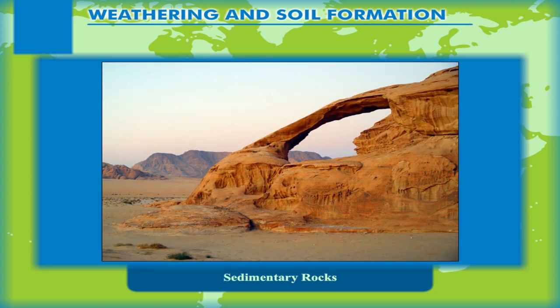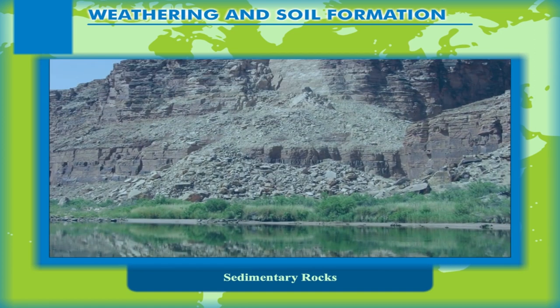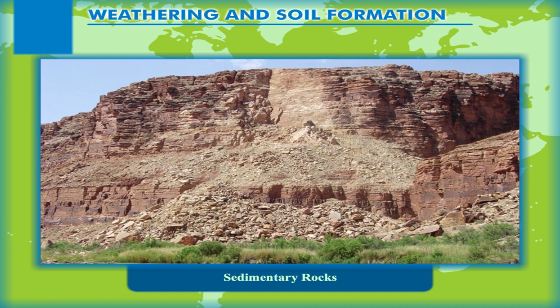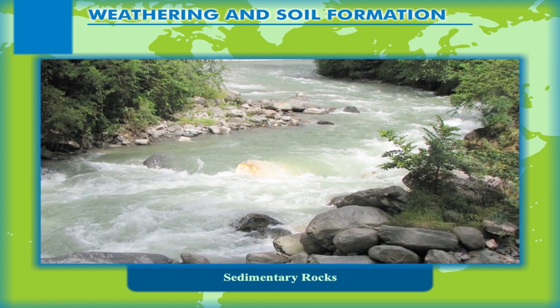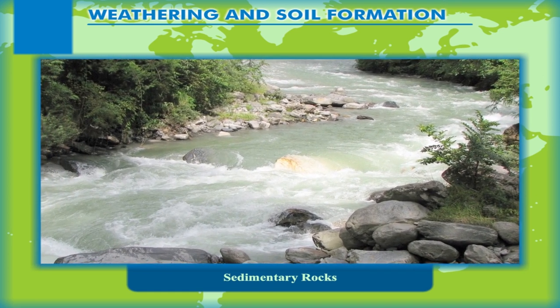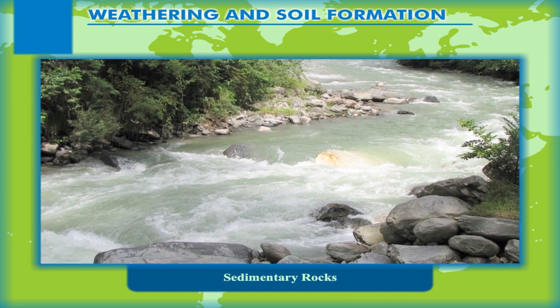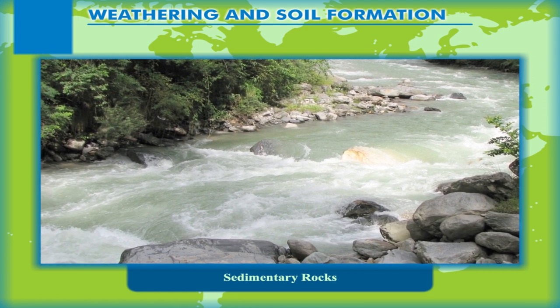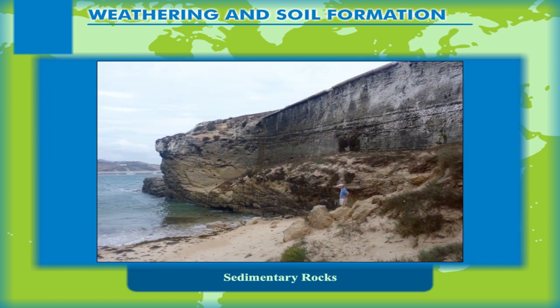Sedimentary Rocks. They are also known as secondary rocks because they are formed from the sediments derived from pre-existing rocks. Igneous rocks are exposed to the forces of nature. These forces break the rock on the surface of earth into small pieces. These small pieces turn to tiny particles with time. These tiny particles are transported by agents of nature like rivers or winds and are deposited at certain places. The deposition of such materials occurs in layers. That is why they are called stratified or sedimentary rocks.